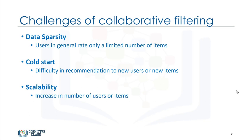Scalability can become an issue as well. As the number of users or items increases and the amount of data expands, collaborative filtering algorithms will begin to suffer drops in performance simply due to growth in the similarity computation. There are some solutions for each of these challenges, such as using hybrid-based recommender systems, but they are out of scope of this course. Thank you.